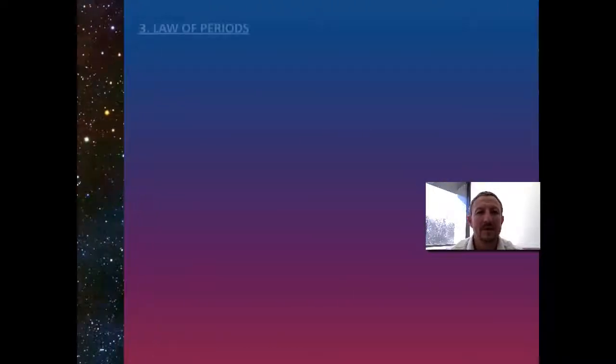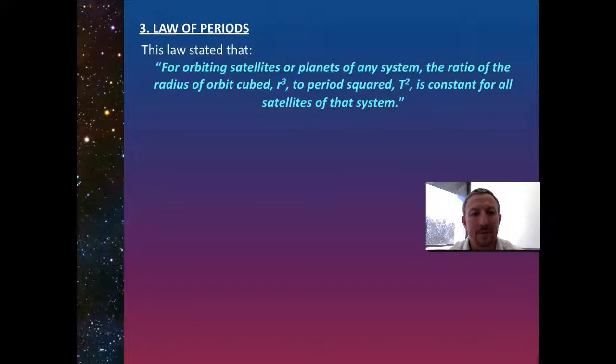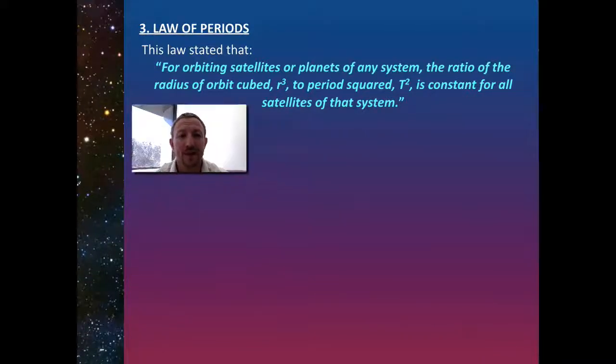His third law is more of a mathematical law which states that for orbiting satellites or planets of any system, the ratio of the radius of orbit cubed, R³, to period squared, T², is constant for all satellites of all systems.